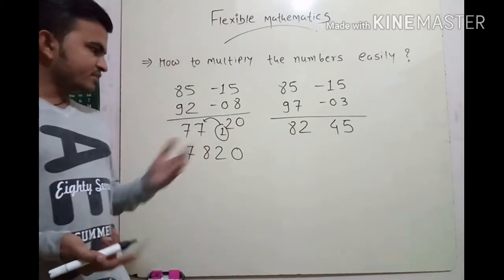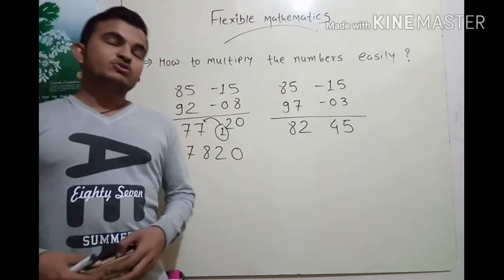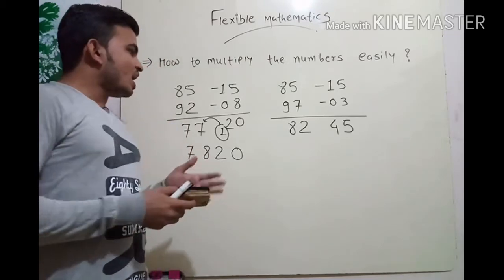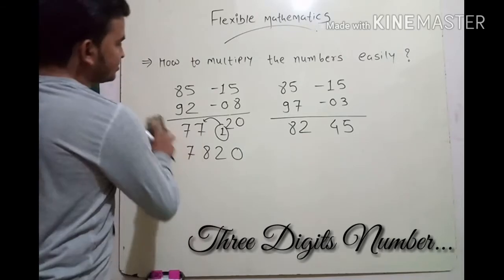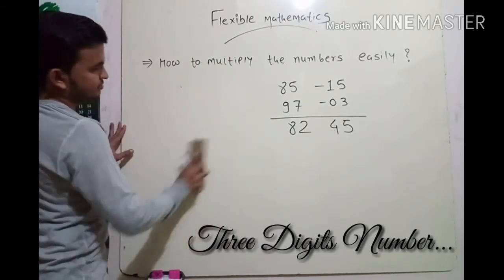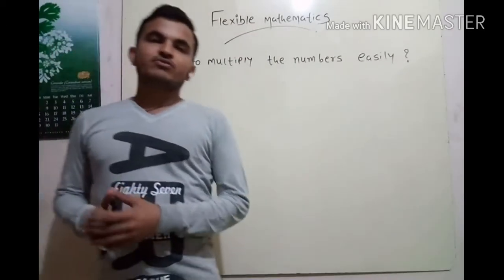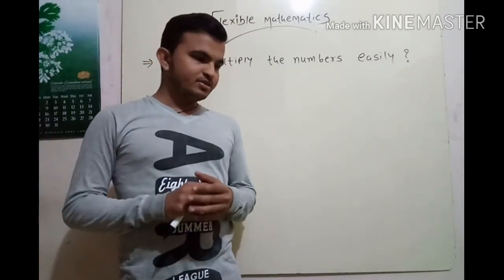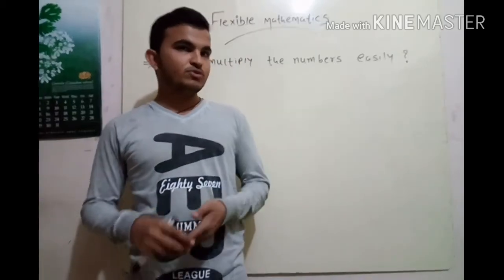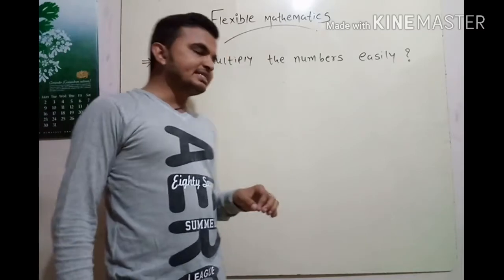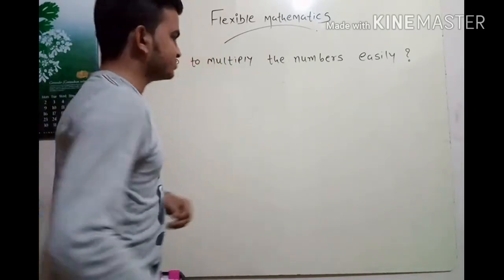So that was the complication, and by using this you can solve it. Finally, we will learn how to multiply three-digit numbers — same operation. For three-digit numbers, they should be near to 1000. Let's take two numbers which are near to 1000.